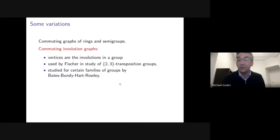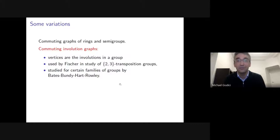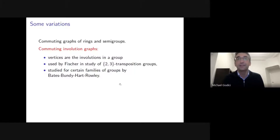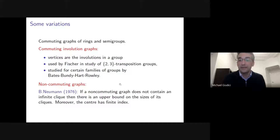Commuting involution graphs also appeared in the classification of finite simple groups — in Fischer's work on 3-transposition groups, where he discovered the Fischer groups. So it's quite serendipitous that in two different parts of the classification of finite simple groups, commuting graphs made an appearance. There are also several papers by Bates, Bundy, Hart, and Rowley studying commuting involution graphs for certain families of groups including Sₙ and some Coxeter groups.